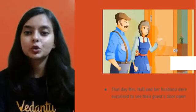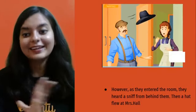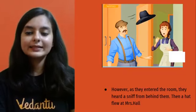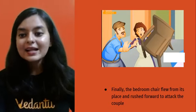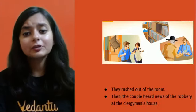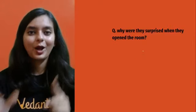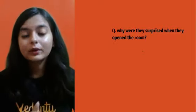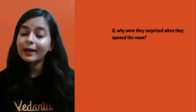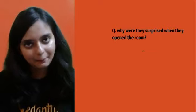That same day, Mrs. Hall and her husband were surprised to find their guest's room open and attempted to check it in Griffin's absence. The moment they entered, Mrs. Hall heard a snip from behind and suddenly a hat flew at her. The bedroom chair also came alive and rushed to attack the couple — they rushed out of the room. At the same time, they heard the news of the robbery at the clergyman's house.